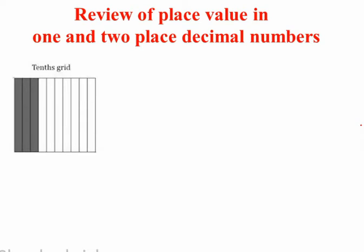Look at the square. The square is divided into 10 equal parts. The colored part shows 3 by 10 of the square. We can also write this in decimal form as 0.3.